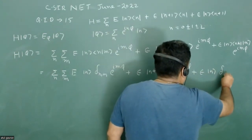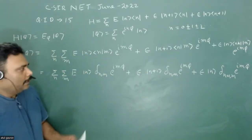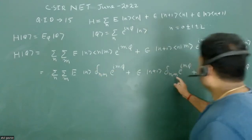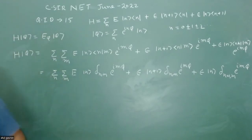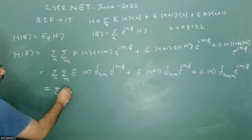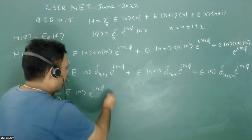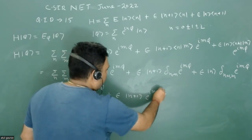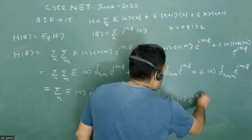Using orthonormality, the first term survives only when n = m, and the coupling term survives only when m = n+1. After applying the delta functions, the double summation reduces to a single summation: e_n|n⟩ e^(inφ) plus ε|n+1⟩ e^(i(n+1)φ).